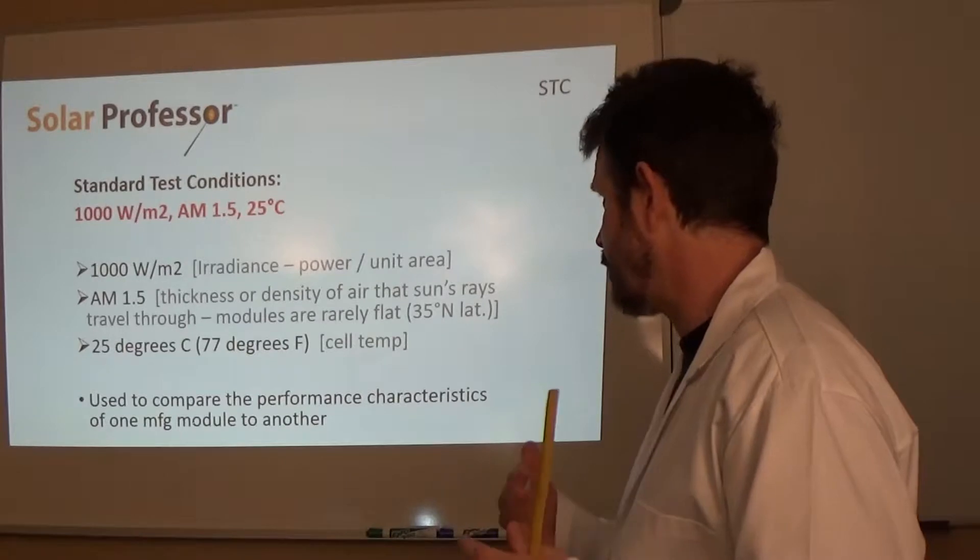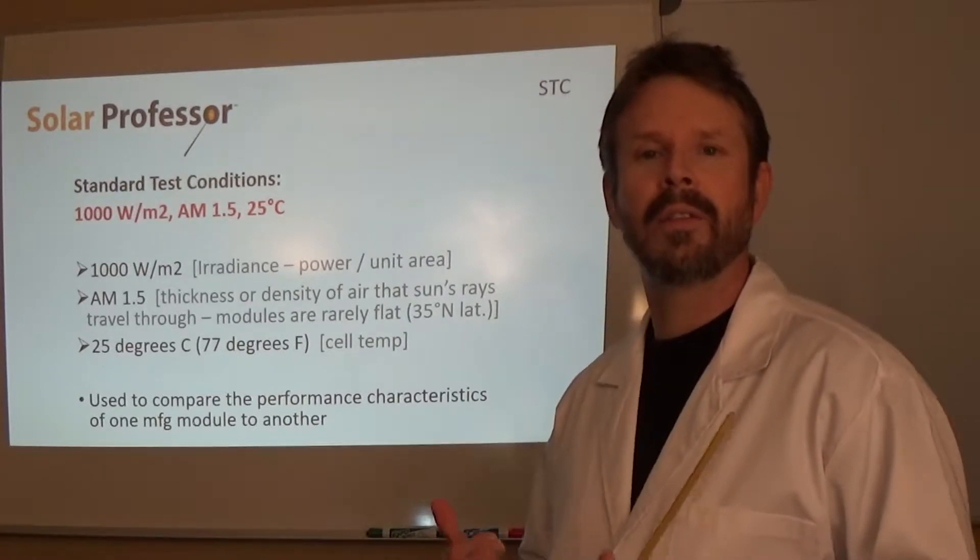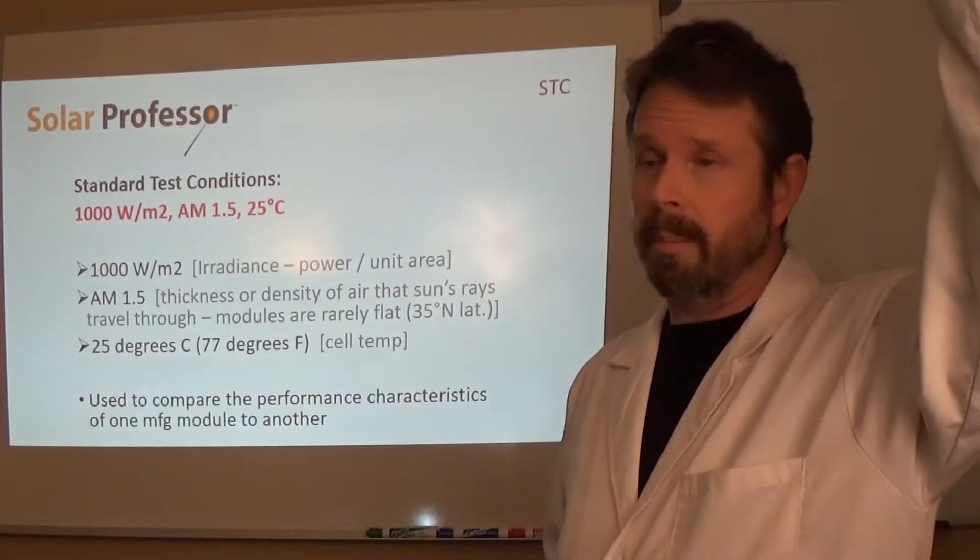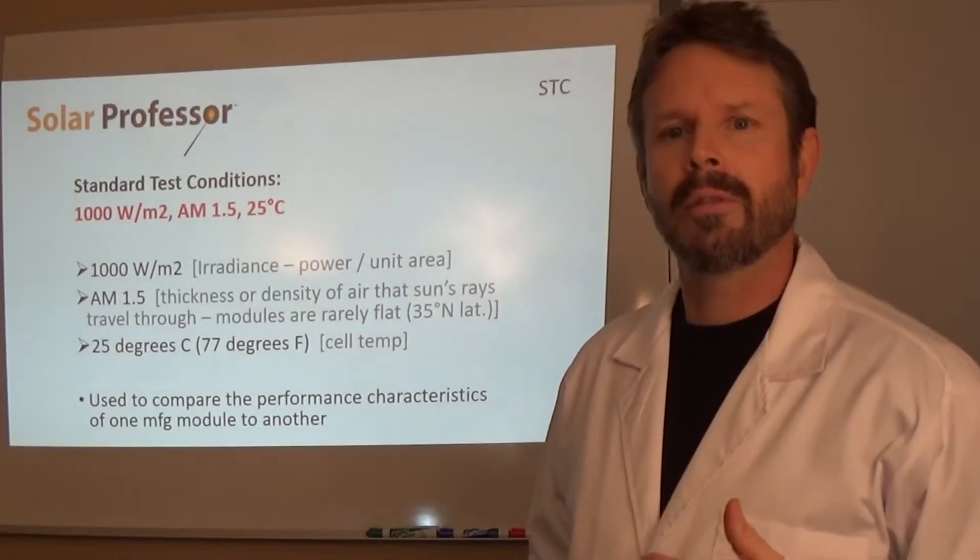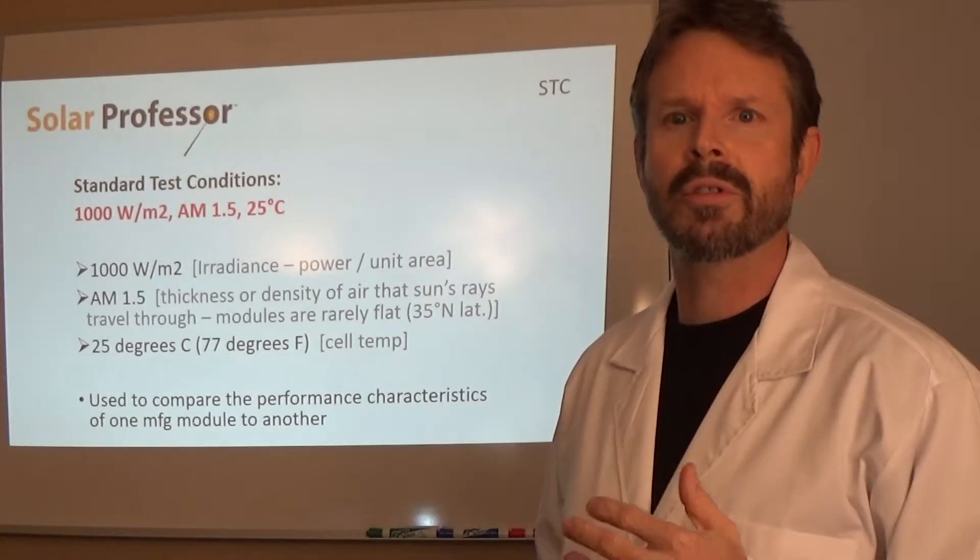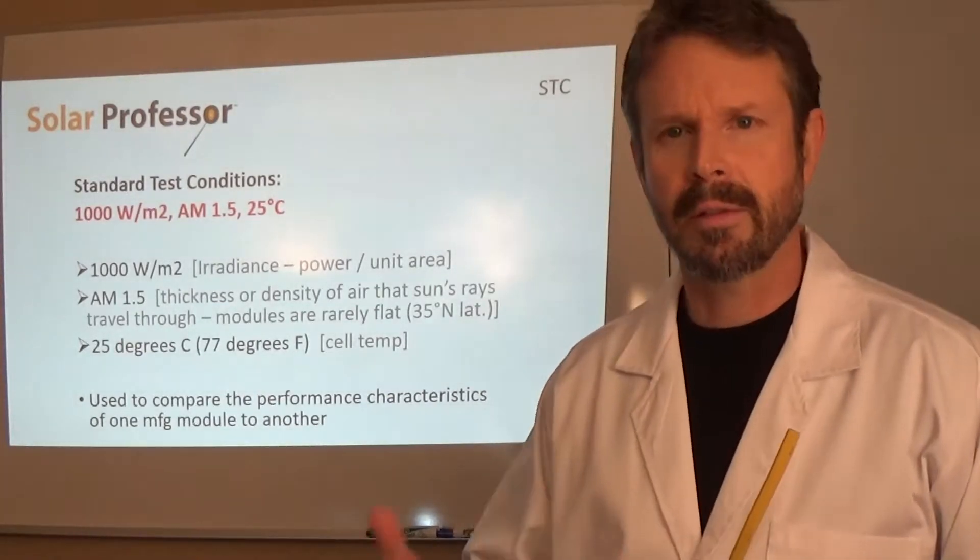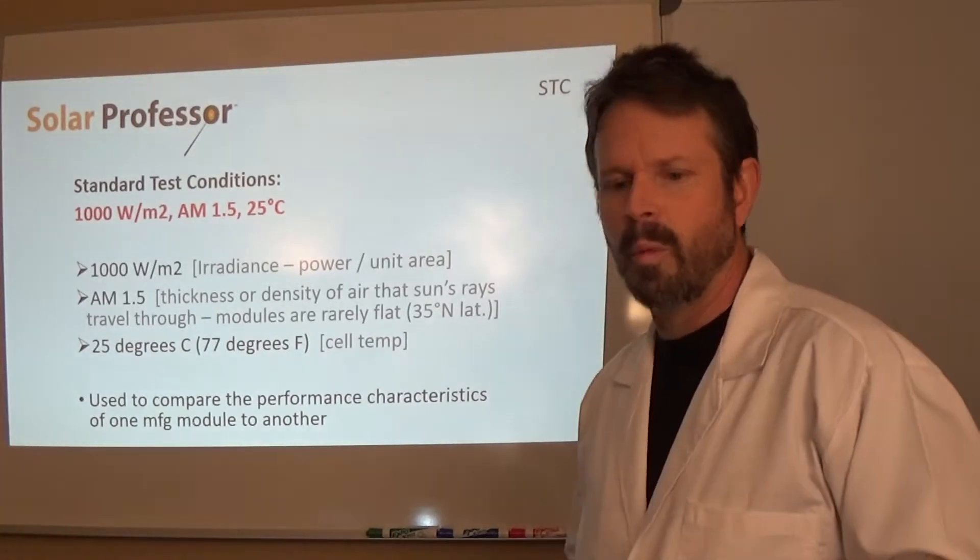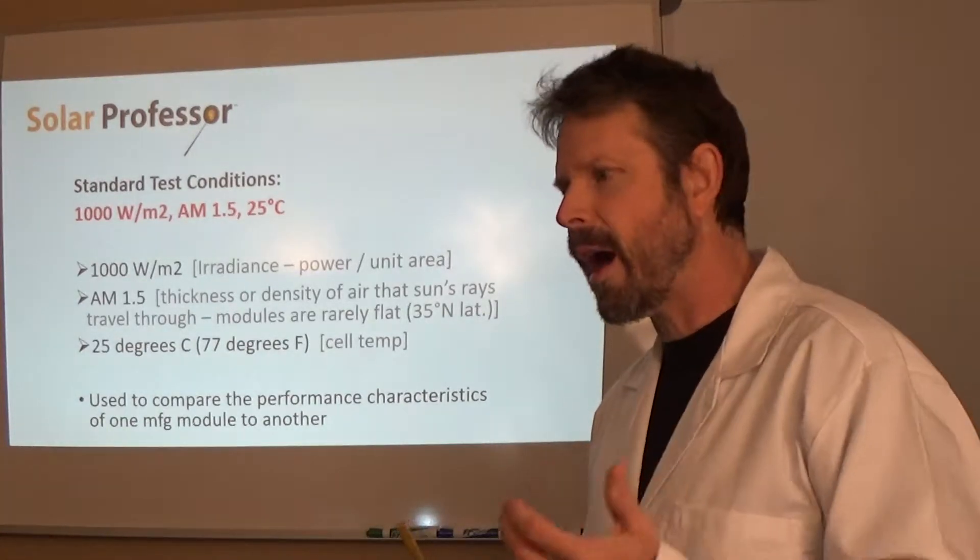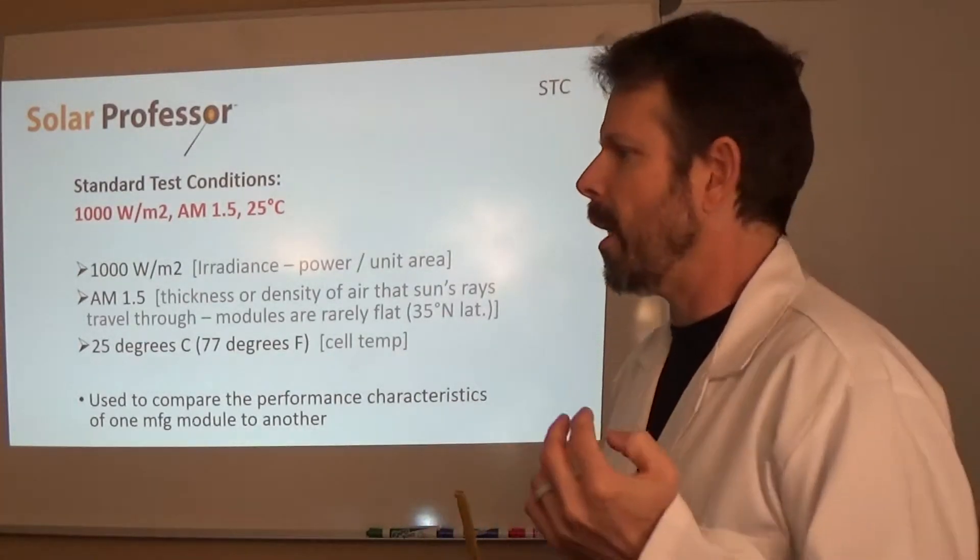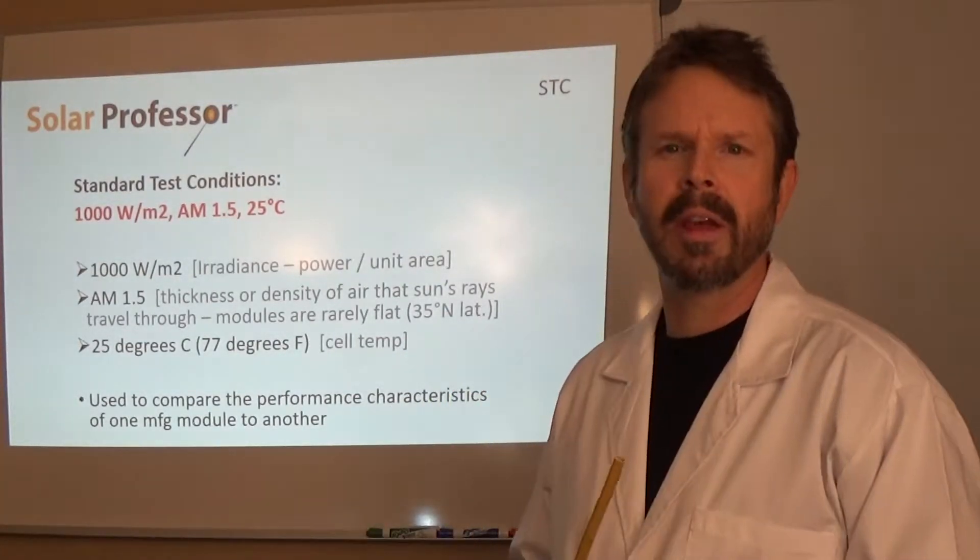Basically, air mass is the thickness or density of the air that the sun's rays have to travel through from extraterrestrial through terrestrial to get to the solar module. And therefore, strike the solar cell and excite those electrons and get them moving and producing energy. Modules rarely are flat. If they were flat, maybe we could move that number more towards one.